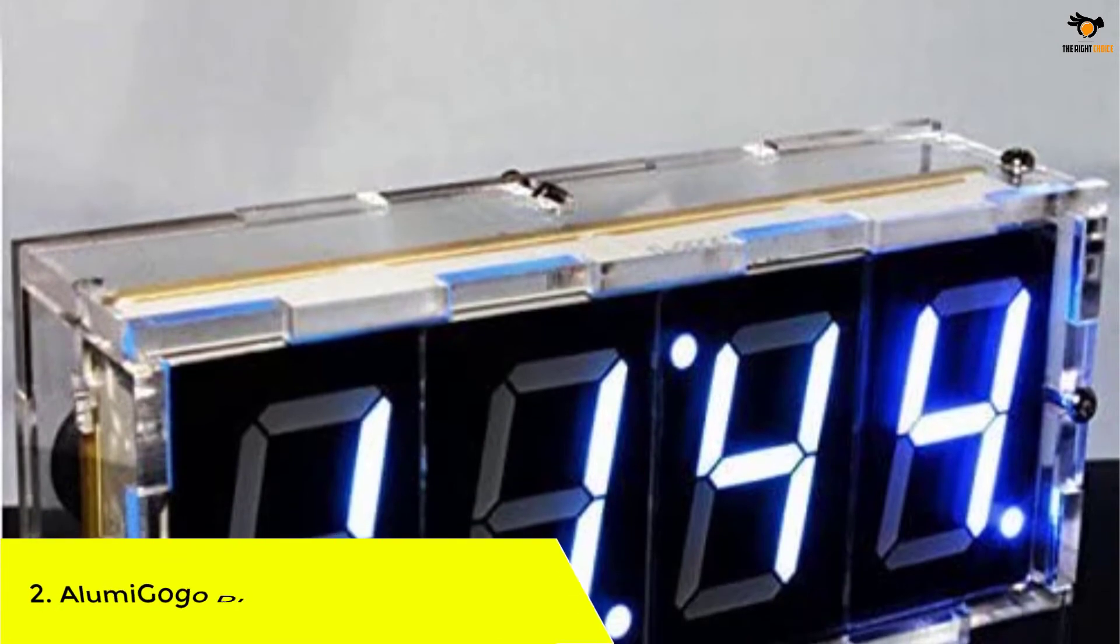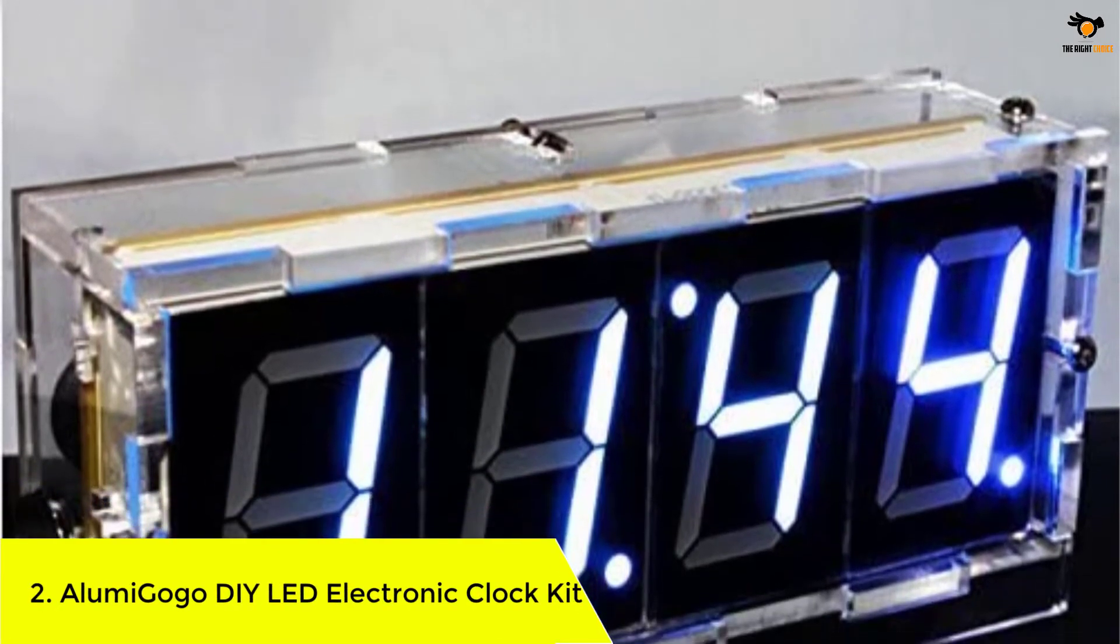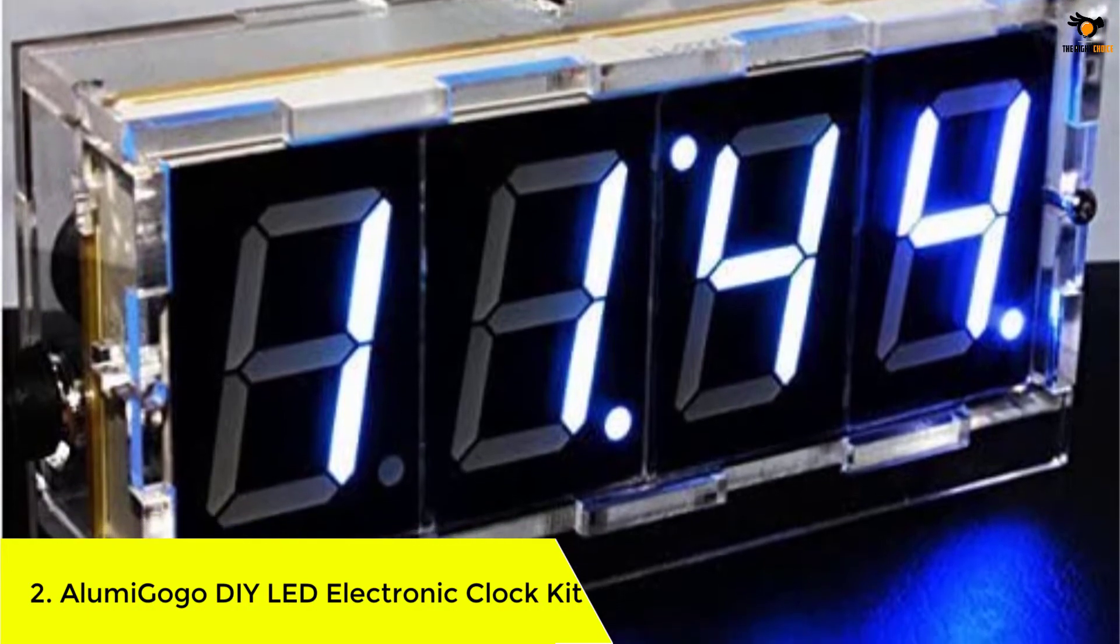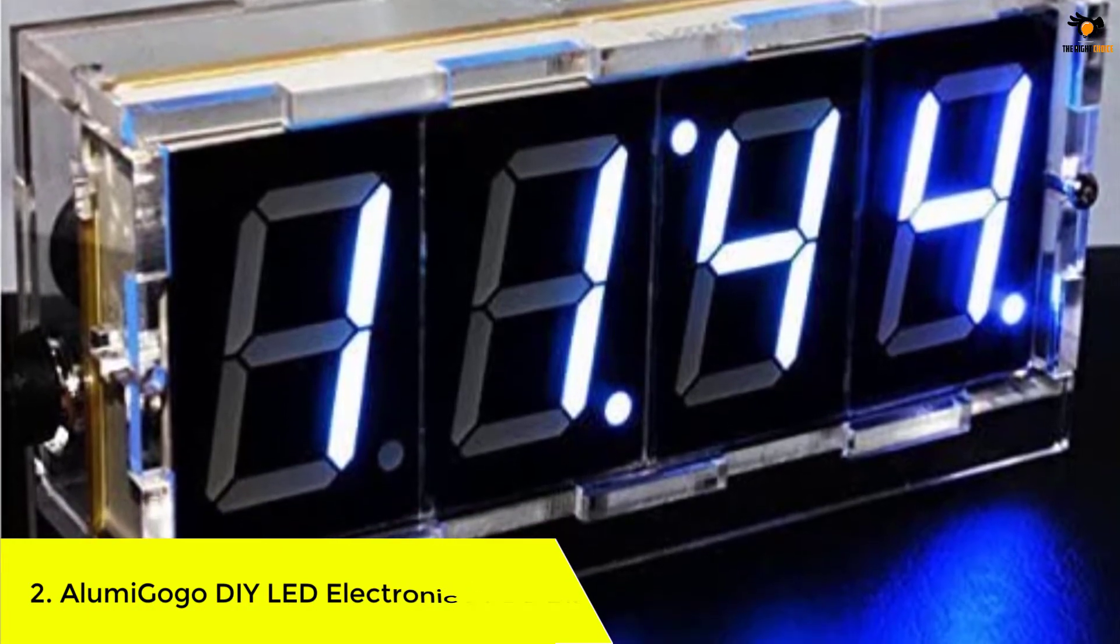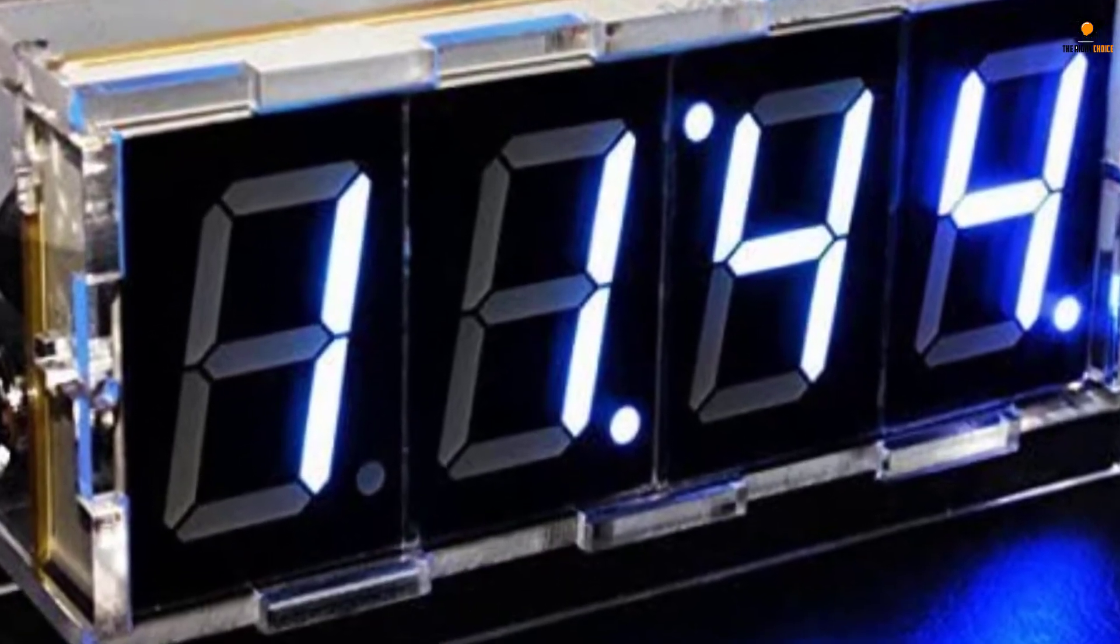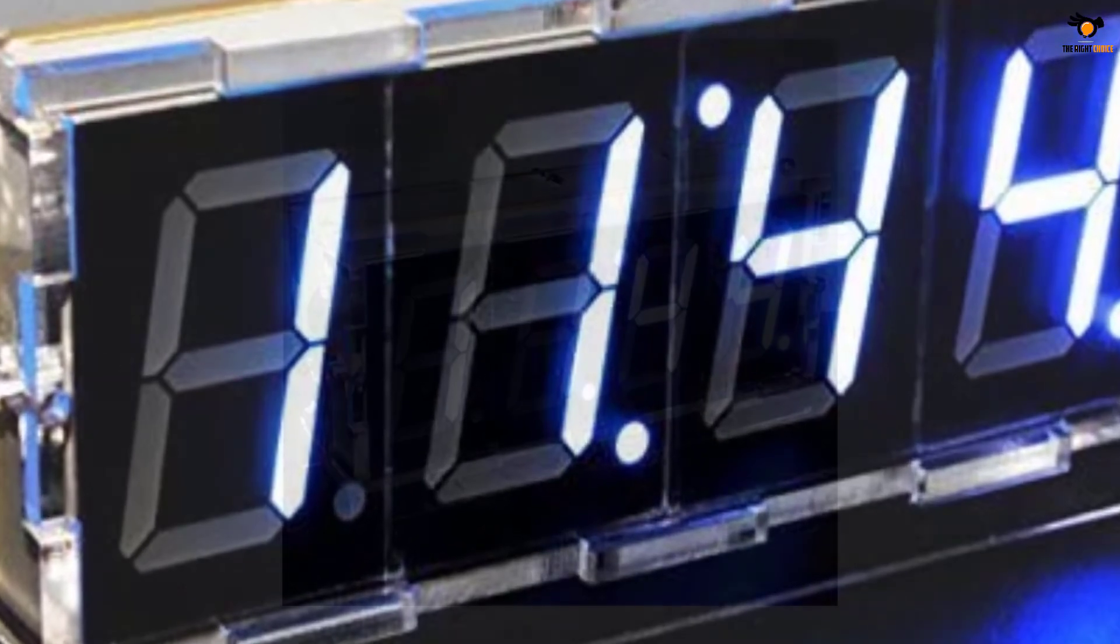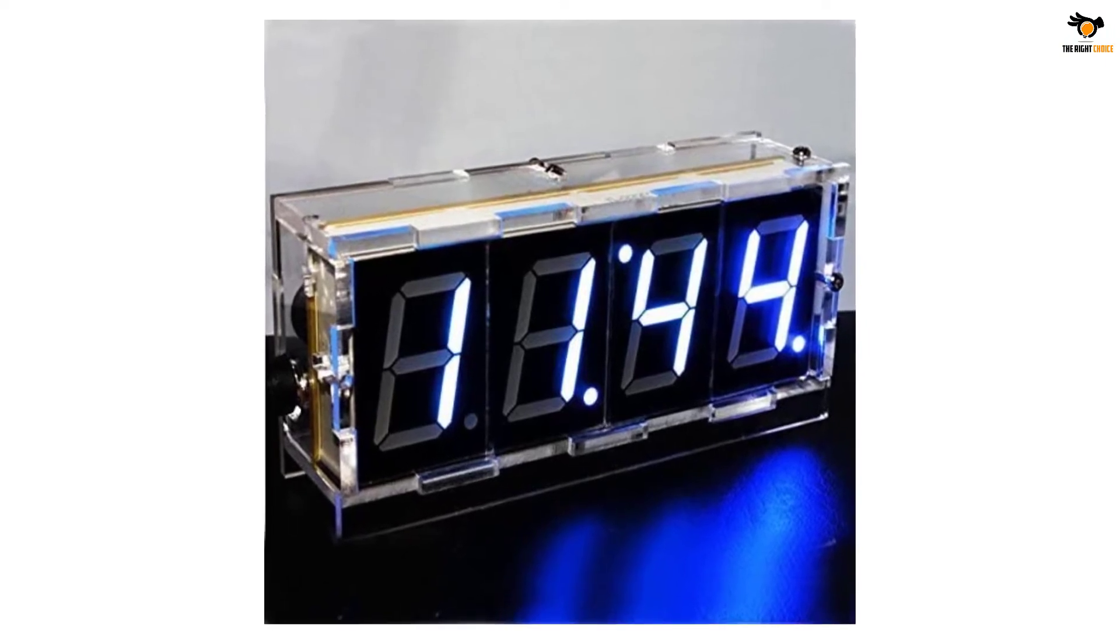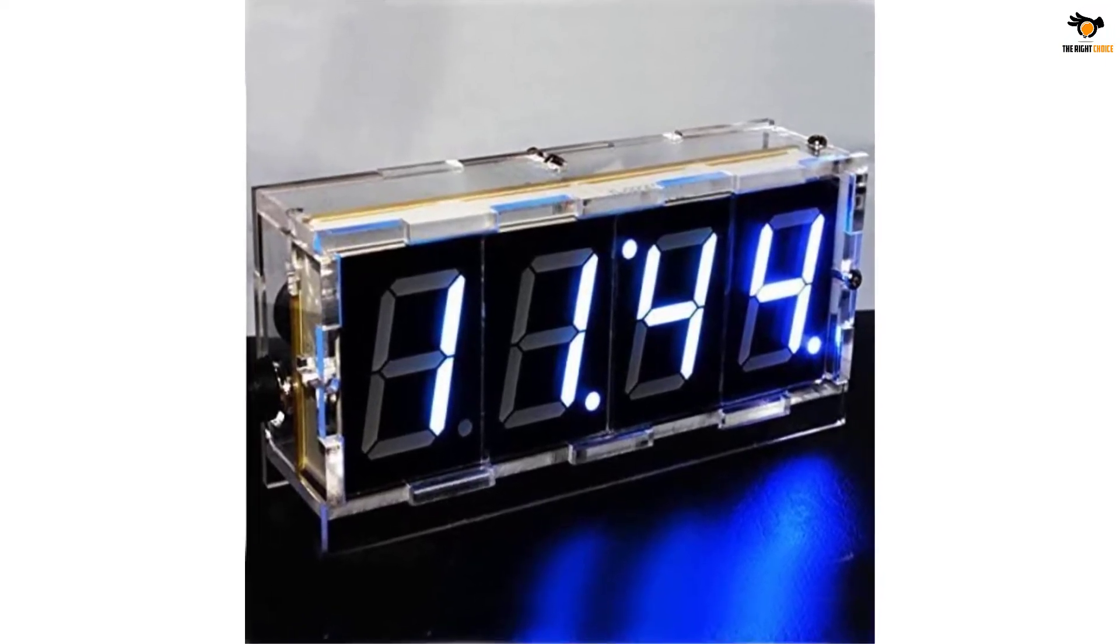Number 2: Illumi Gogo DIY LED Electronic Clock Kit. Next on our list is the Illumi Gogo DIY Digital LED Electronic Clock Kit. It is a simple DIY clock that offers simple features and aesthetics. It is easy to assemble, as the chip given is pre-programmed and you have to place and solder it.